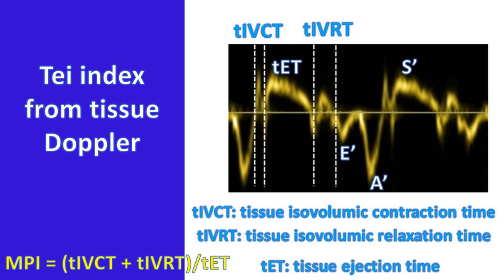The MPI can also be measured indirectly from tissue Doppler, designated as TMPI. Corresponding tissue Doppler measurements are TIVCT (tissue isovolumic contraction time), TIVRT (tissue isovolumic relaxation time), and TET (tissue ejection time). Measurements are taken using pulsed tissue Doppler from the lateral tricuspid annulus.